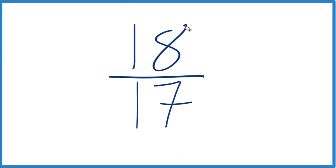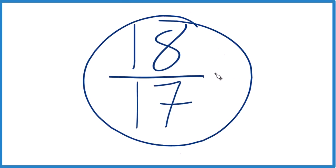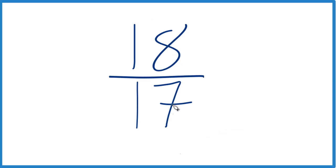Someone asked me to simplify the fraction 18 seventeenths, and we'll also write this as a mixed number too. So 18 seventeenths, there really is no whole number other than one that goes into both 18 and 17 evenly.